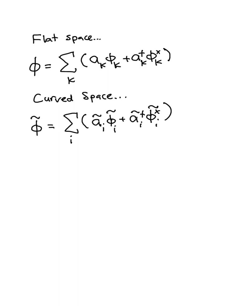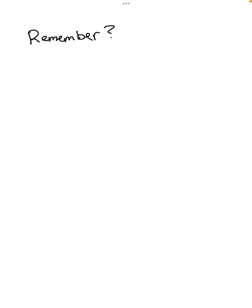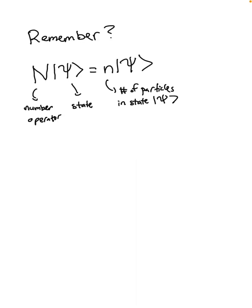In curved spacetime, specifically that around a black hole, our field looks different, so we denote the new plane waves and coefficients by a tilde sign. Remember when we said that the number operator is the product of the creation and annihilation operator? Well, since the creation and annihilation operator changes in curved spacetime, that means that the number operator will also change in curved spacetime.